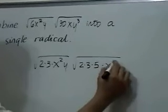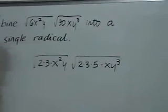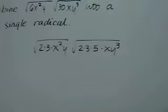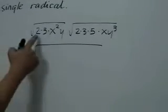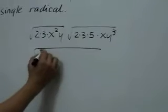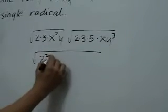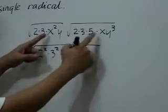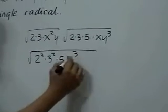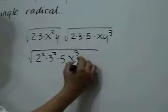Combining this using the law of radicals, we will give us 2 squared, 3 squared, times 5, x cubed, y to the fourth.